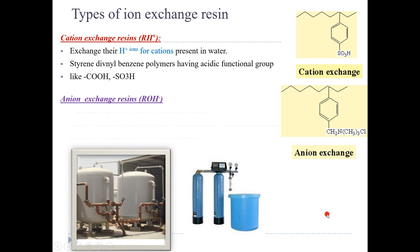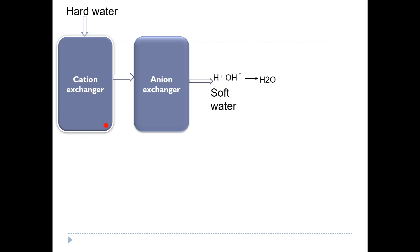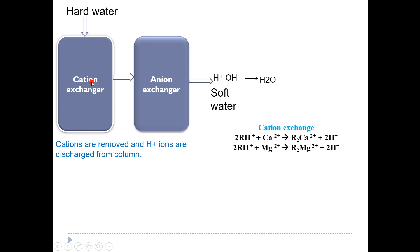In the anion exchanger or anion exchange resin, OH– ions are introduced into the water. The resin contains functional groups like amino or phosphonium, which can exchange ions. The process is two steps: first, hard water goes into the cation exchanger where exchange of cations takes place. During this first step, cations are removed and H+ ions are released into the water — the resin contains H+ ions which are replaced by the hard water cations like calcium and magnesium.